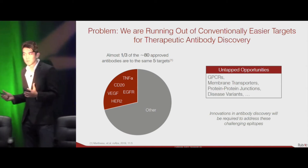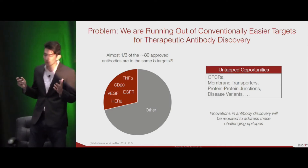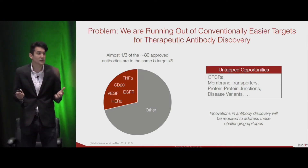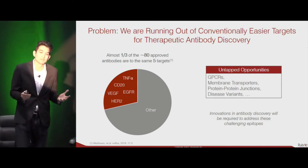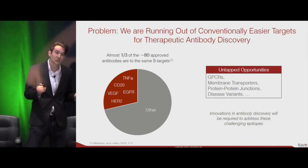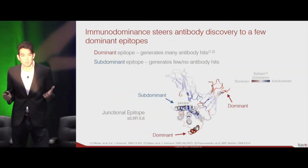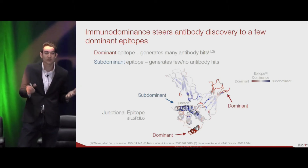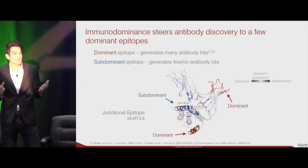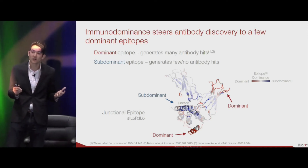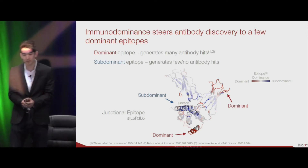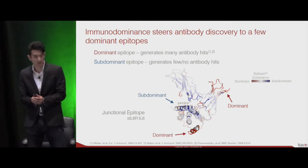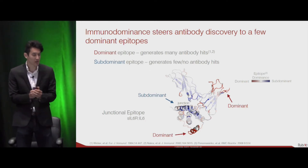This tells me that the current state of antibody discovery technology is insufficient to effectively or efficiently go after more challenging targets. That's what we want to do at Rubric Therapeutics. But in order to understand how to go after these more challenging targets, we first have to understand what makes them so difficult — and for many of these targets that has to do with something called immunodominance.